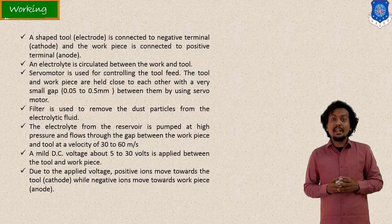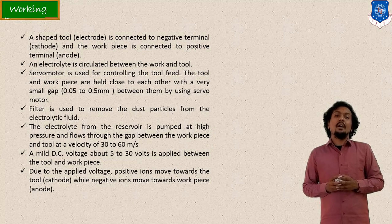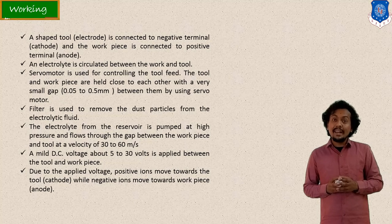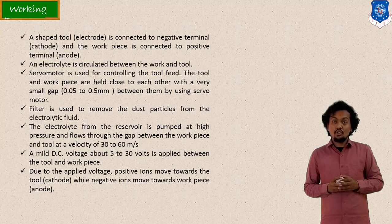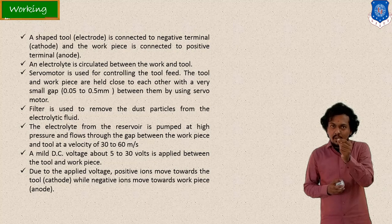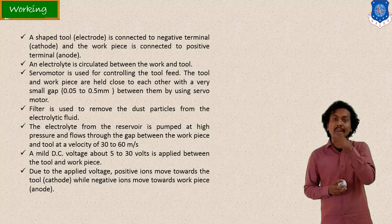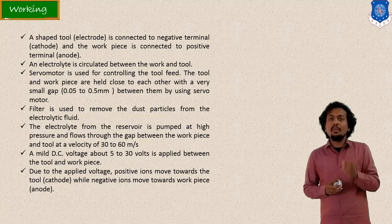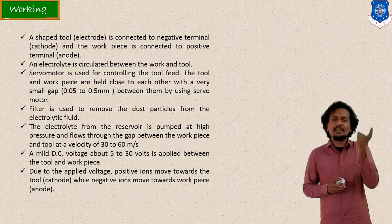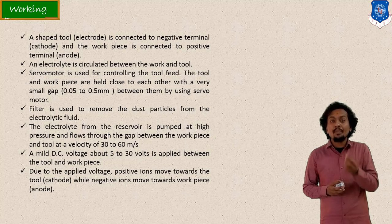DC voltage is applied and by passing current through the electrolyte we can remove material from the workpiece. When we switch on the current, material from the workpiece tries to deposit on the tool. However, electrolyte is continuously flushing between the tool and workpiece, so the removed material transfers into the electrolyte. In the filter, the scrap or removed material is separated, and then the clean electrolyte is supplied again.